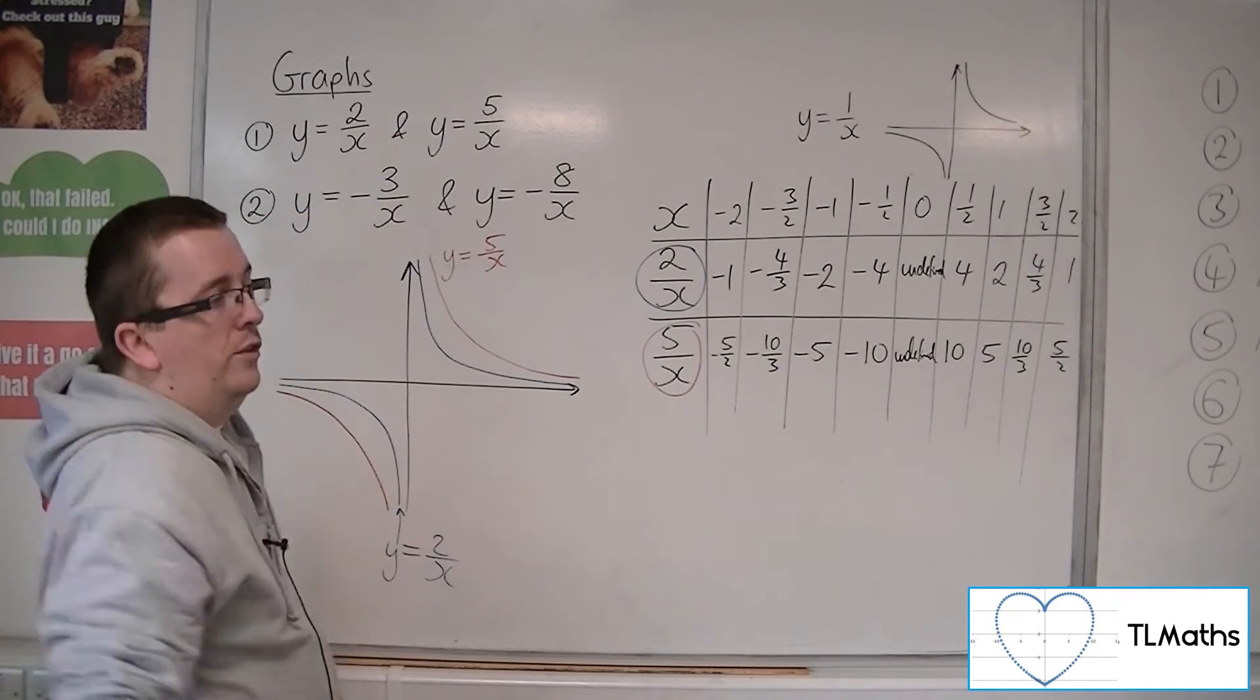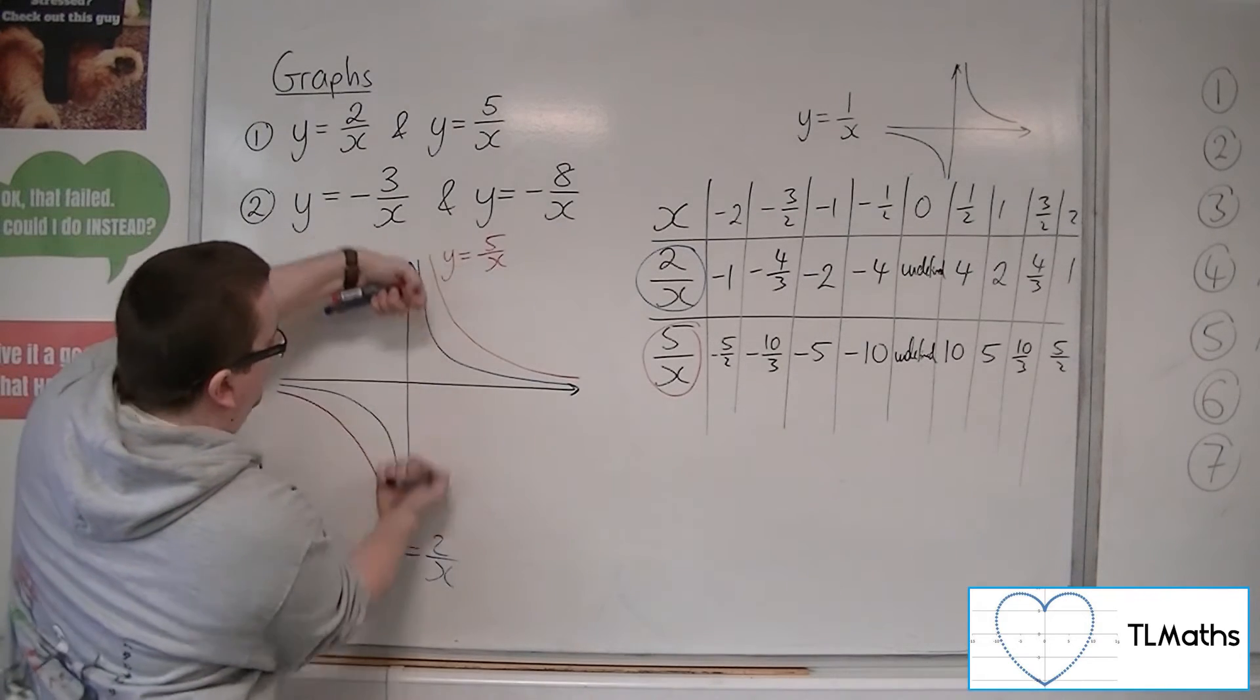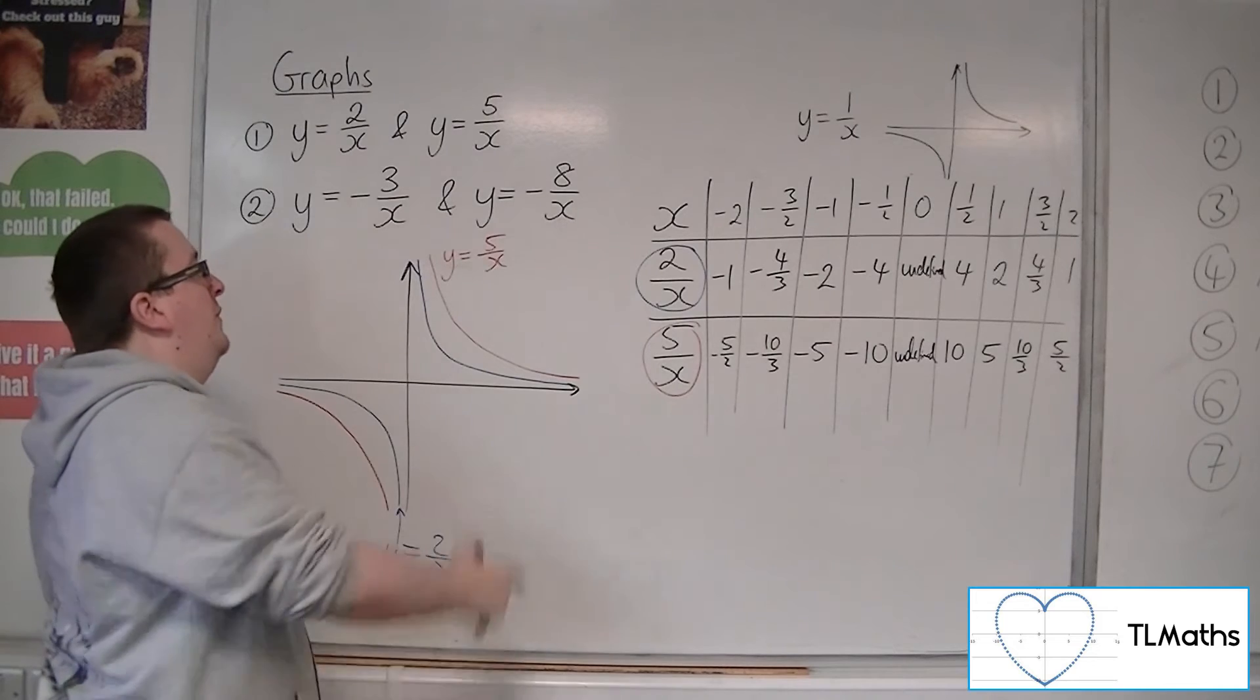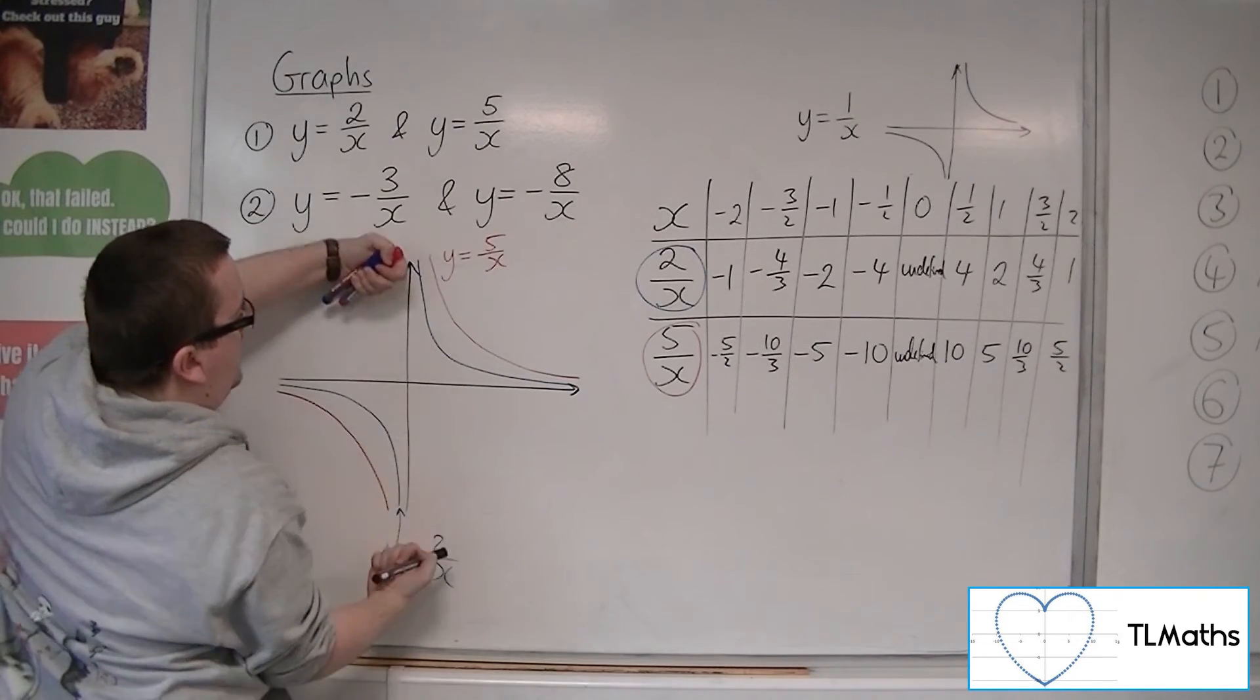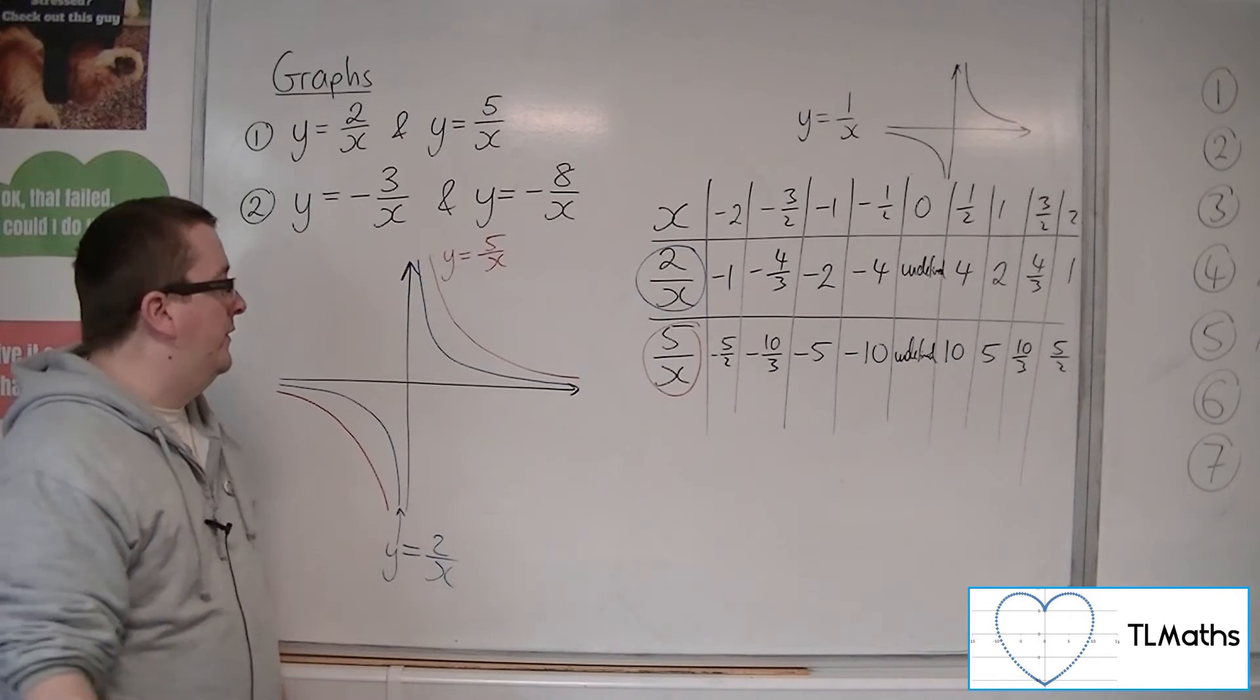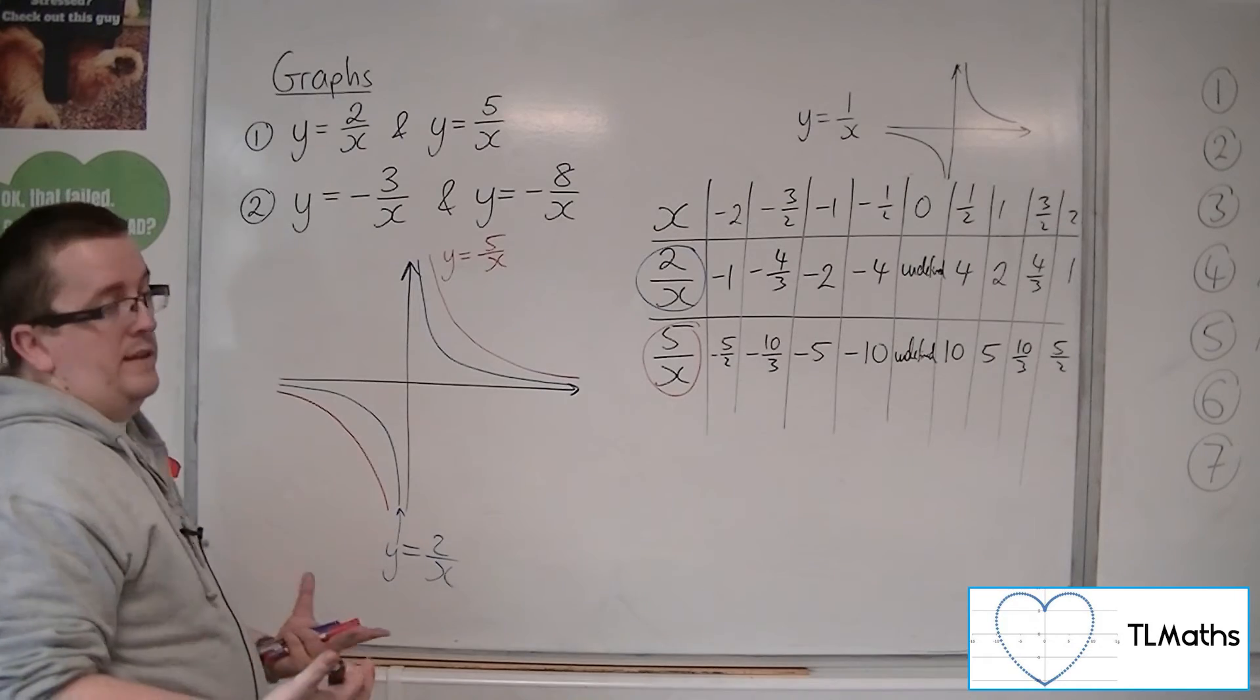So it's pulling all of the values away from the x-axis. So that it just stretches it out. So the larger the value in the numerator, the further it is away from the x-axis. And that's how we can draw one on top of the other like that.